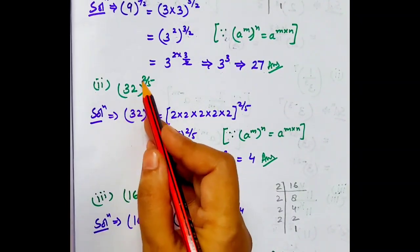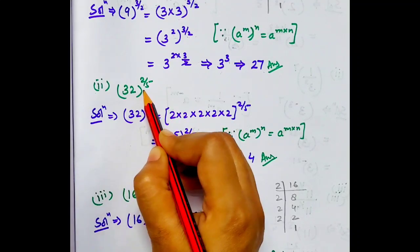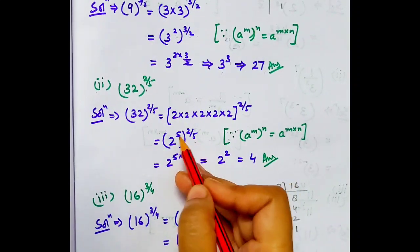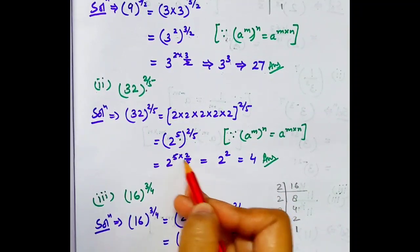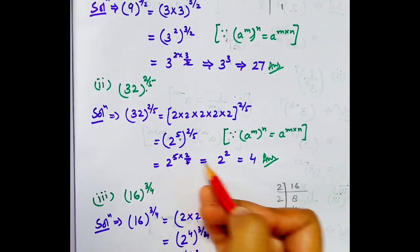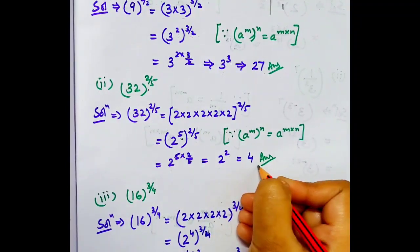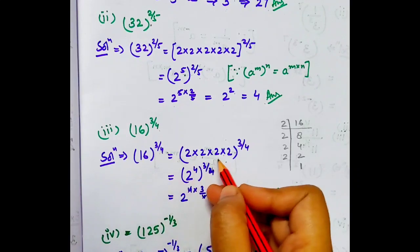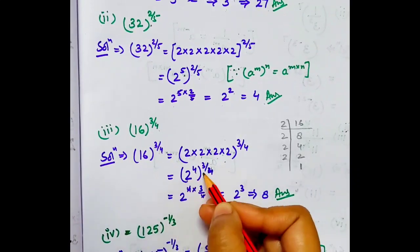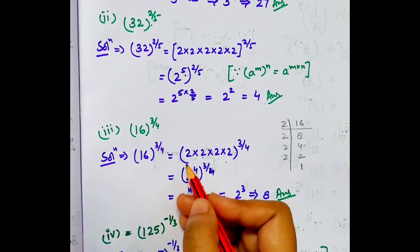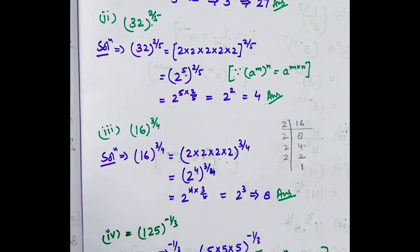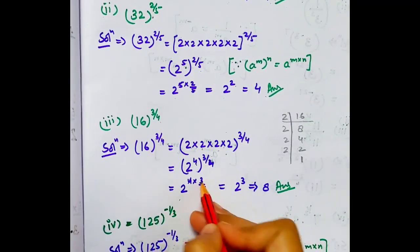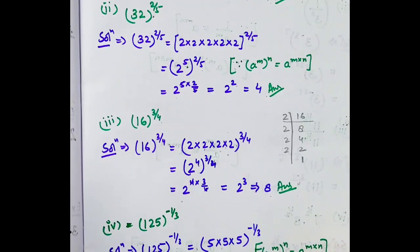Next part: 32 to the power 2 by 5. 32 ko hum 2 to the power 5 likh sakte hain, aur whole to the power 2 by 5 diya huwa hai. Dono powers multiply ho jayengi. 5 se 5 cancel ho jayega, aur hume milega 2 to the power 2, which is 2 square. Answer 4 ho jayega. Phir 2 cube which is equal to 8. 2 cube ki value 8 hoti hai.